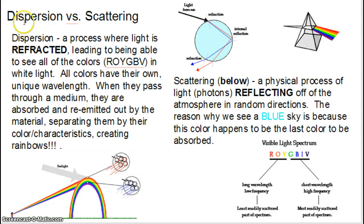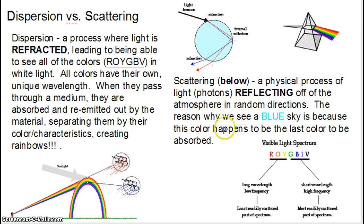This process of dispersion is different from that of scattering. Scattering is a physical process of how light, or photons, are reflecting off of the atmosphere — or the gases within the atmosphere, primarily nitrogen and oxygen — in random directions. The reason why we see blue sky is because blue happens to be the last color to be absorbed by the atmosphere.